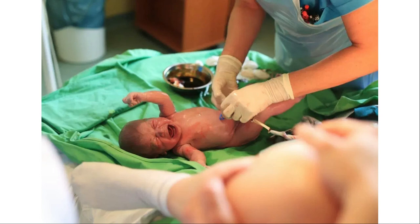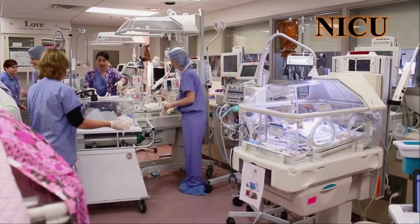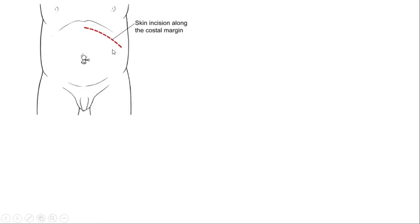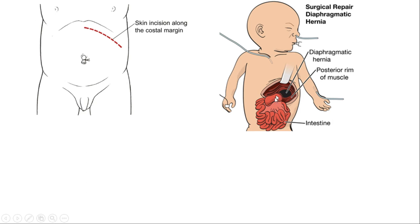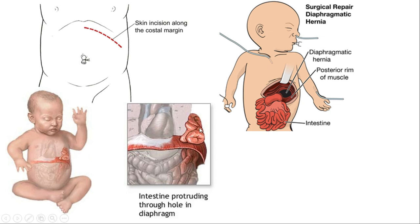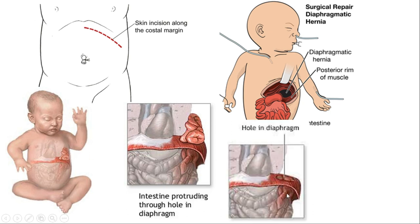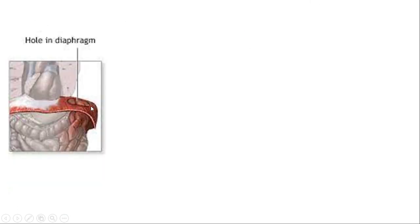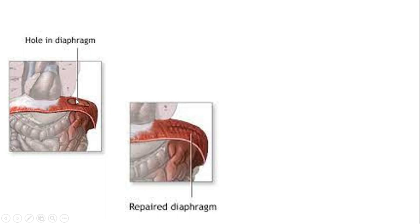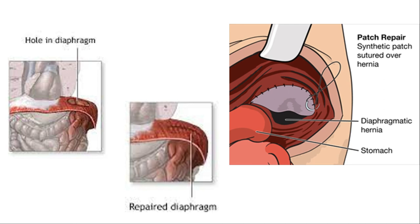The child is first stabilized and taken to the NICU — the neonatal intensive care unit — and pulmonary hypertension is corrected. When stabilized, the baby is ready for surgery. Surgery is performed under general anesthesia; an incision is given on the abdomen just below the rib cage for a clear view of the diaphragm from below. The abdominal contents are pulled downward back into their normal position, the hole is identified, and then repaired. If the hole is small, sutures are placed; if large, a patch is placed over the defect.